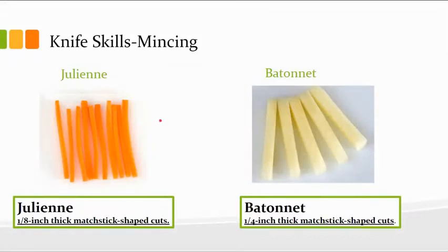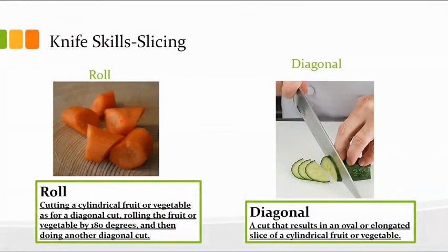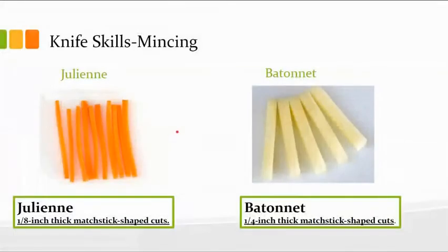The next one is called the julienne. It is literally a one-eighth-inch matchstick shape cut, about two inches or so long, and then an eighth of an inch all the way around. This is really great for presentation, but it does seem to have a lot of waste — whereas your roll and your diagonal have very little waste, the julienne has lots of product you would end up throwing away just for presentation. However, if you compost, you can save all those scraps.